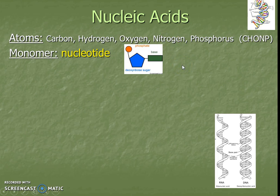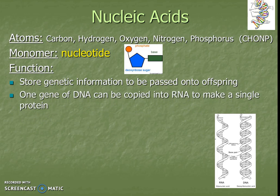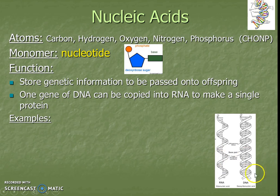The nitrogen base in a nucleotide also helps us remember that nitrogen is part of nucleic acids. The last component of a nucleotide is a sugar, which differs depending on the type of nucleic acid. The functions of nucleic acids are to store genetic information to be passed on to offspring, and through protein synthesis, a single gene in DNA can be copied into RNA to make proteins — that's transcription and translation.